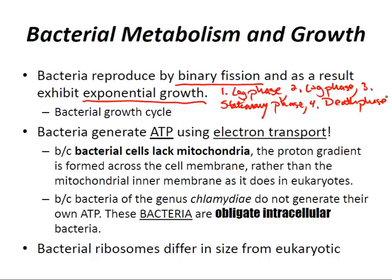The lag phase involves high metabolic activity but no division. The log phase is where cells are rapidly dividing. The stationary phase involves nutrient depletion and toxin accumulation that slow cell growth and division. The death phase is a decline in the number of viable bacteria due to nutrient depletion and toxin accumulation — this is when most bacteria release their toxins.